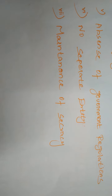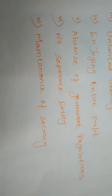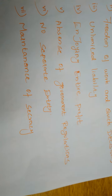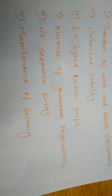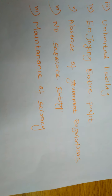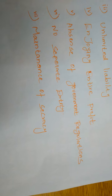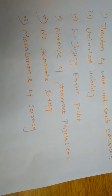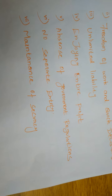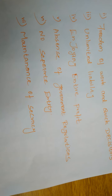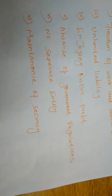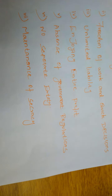Next: no separate entity. All the rights will come to an end after the death of the sole trader, so the sole trading business automatically ends. Next: maintenance of secrecy. Whatever secret decisions are undertaken by the sole trader will not be leaked out to third persons, because he only takes all the decisions and applies them himself — there is no need for outside secrecy maintenance.